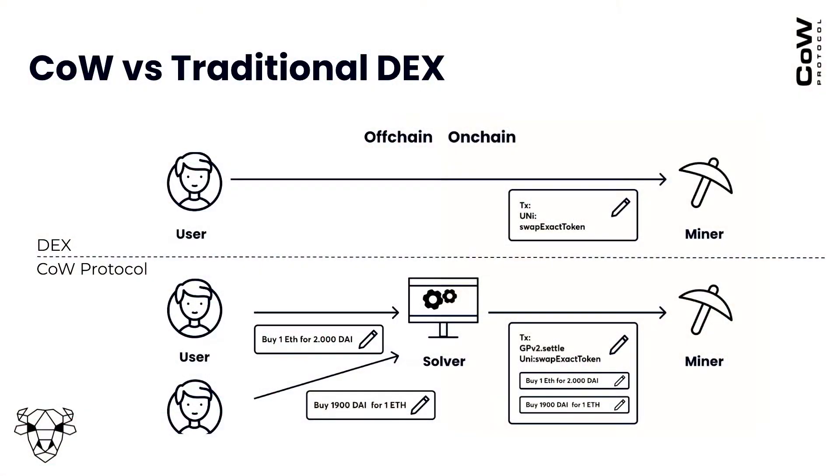The intuitive question people ask is: if the miner doesn't value-extract me, how can I be sure the solver doesn't? The answer is that it's not a single solver processing your orders - it's a network of solvers competing for your order flow. Solvers propose settlements to the protocol, and the protocol picks whichever solver has proposed the best settlement in terms of global welfare - basically price improvement for each individual order. The key point is: it's a network of solvers competing on price, and the best price execution gets the right to execute your order flow on-chain.